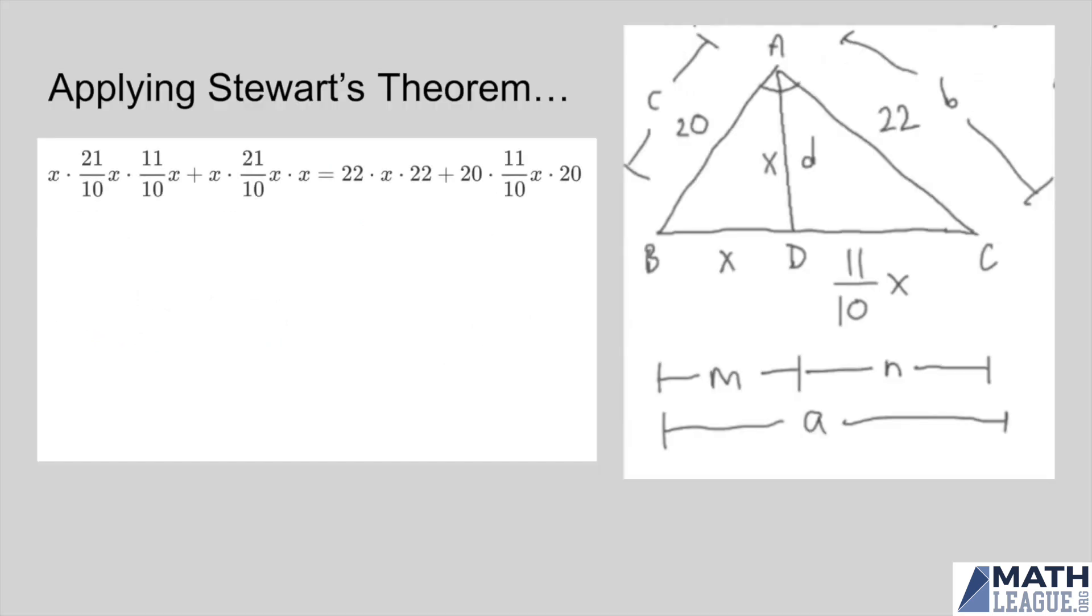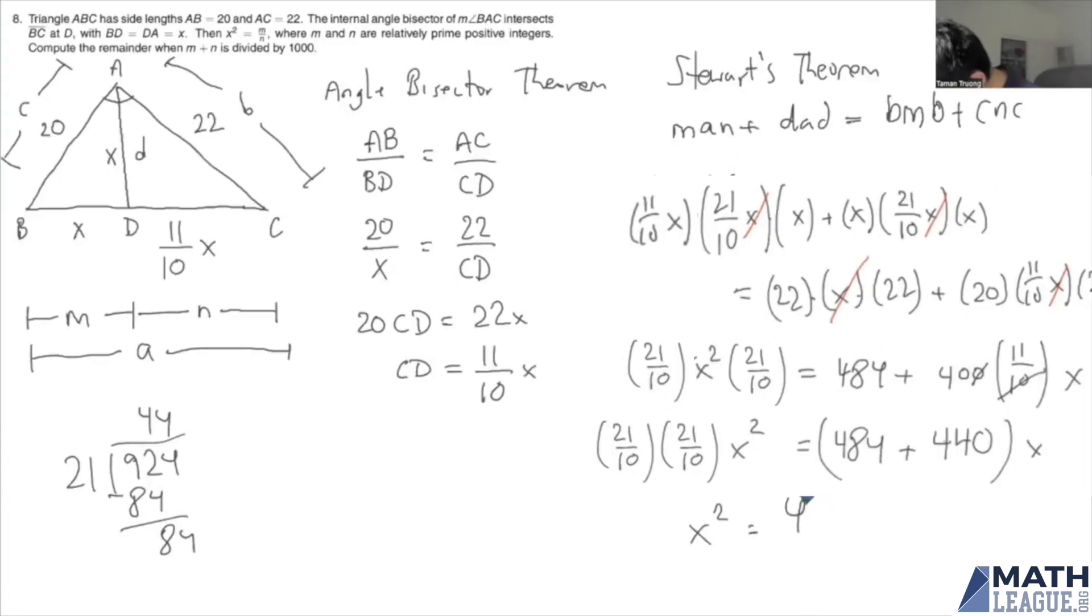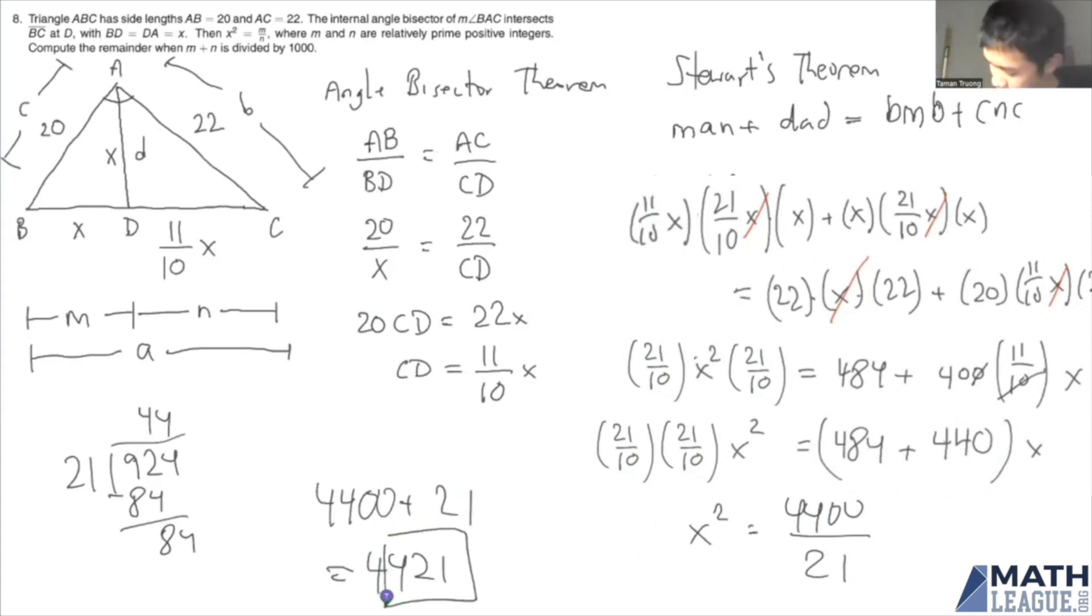And so here we just plug in and factor things out, cancel things out because lengths can't be zero. So here we get X squared to be 4,400 over 21. And so we see that 4,400 plus 21 is 4,421, divide by 1,000, and you get 421 as our final answer. And we're done.